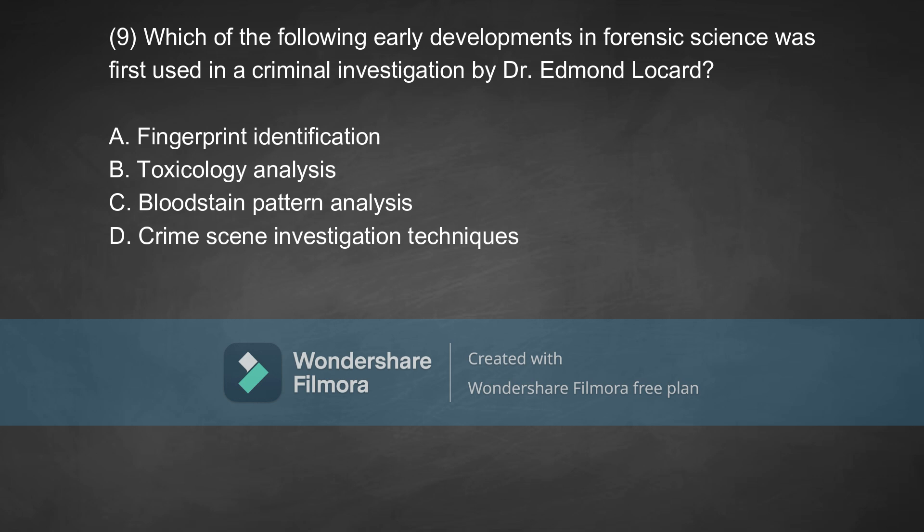Coming to the ninth question: which of the following early developments in forensic science was first used in criminal investigation by Dr. Edmond Locard? Option A, fingerprint identification. Option B, toxicology analysis. Option C, bloodstain pattern analysis. Option D, crime scene investigation technique. The correct answer is Option D, which is crime scene investigation technique.